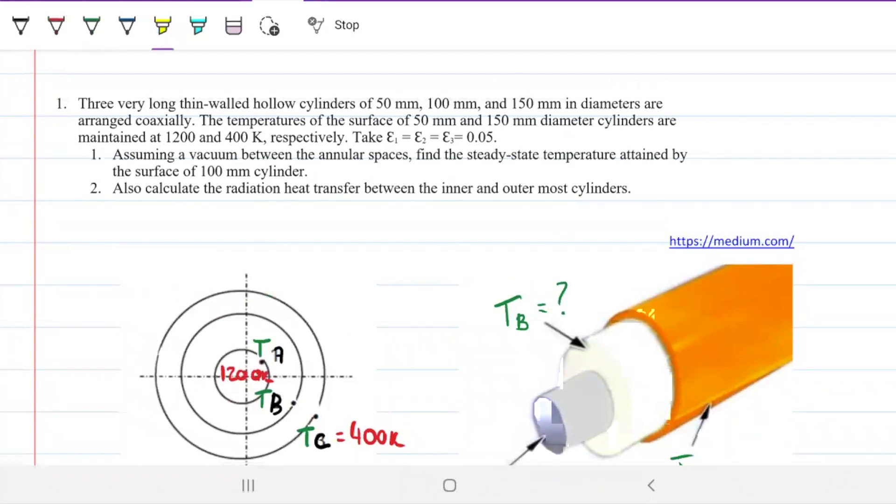So, what is important here? A couple of things are important. Very long is important, vacuum is important, and thin wall is important.